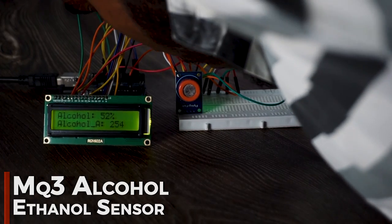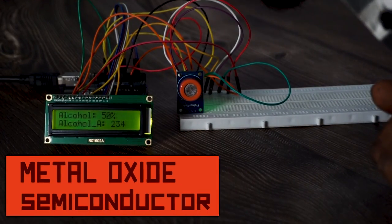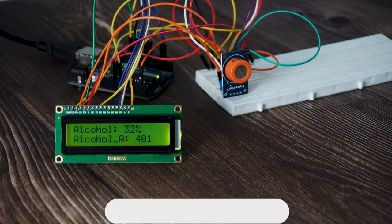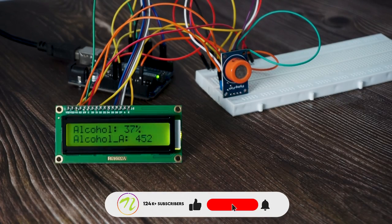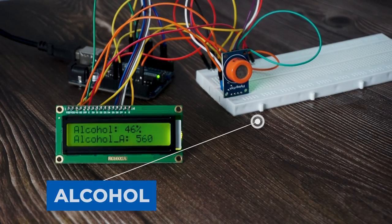MQ3 alcohol ethanol sensor is also known as metal oxide semiconductor. We get a change in the resistivity of this sensor as soon as it is exposed to alcohol.